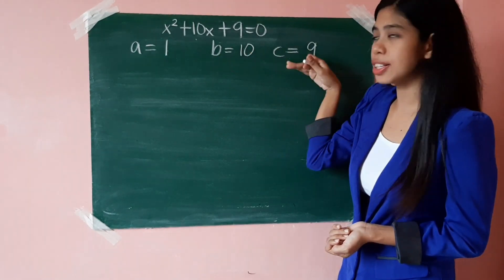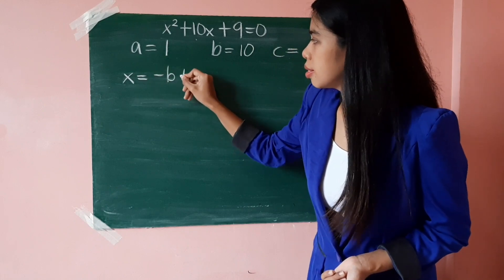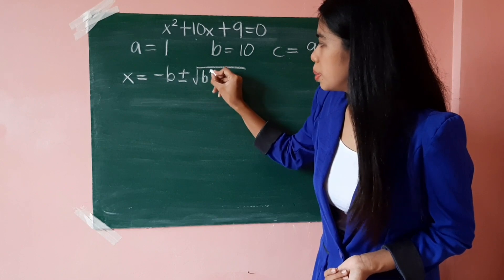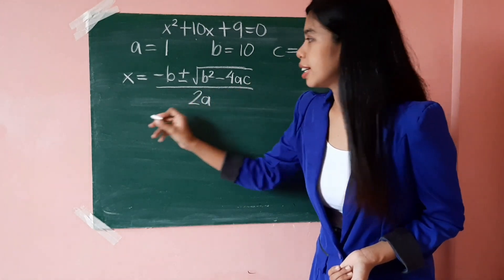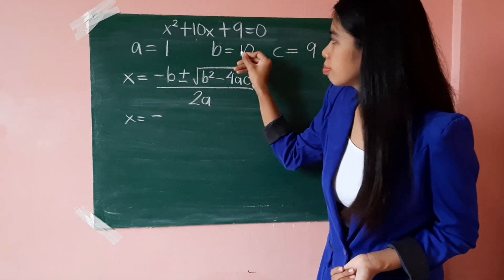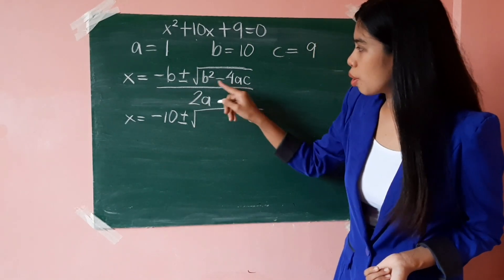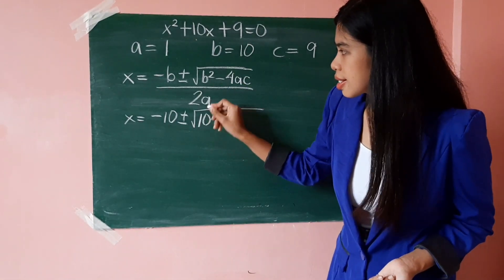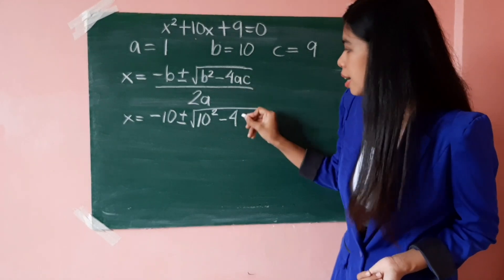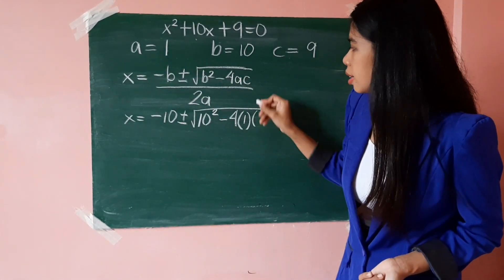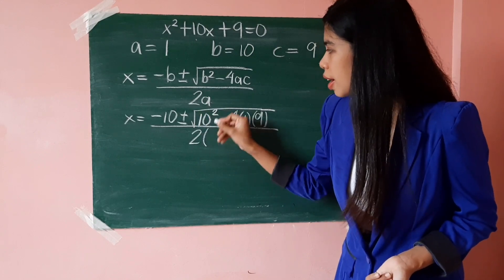We may now substitute these values of a, b, and c in the quadratic formula: x equals negative b, plus or minus square root of b squared minus 4ac, all over 2a. So that's negative 10, plus or minus square root of 10 squared minus 4 times 1 times 9, all over 2 times 1.